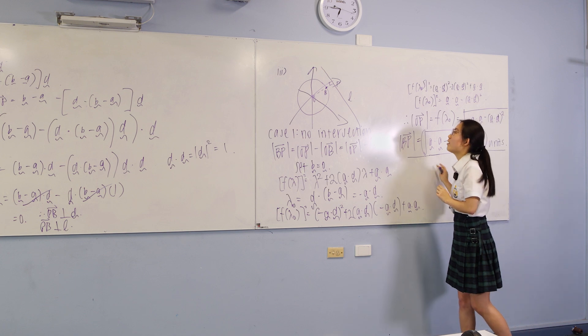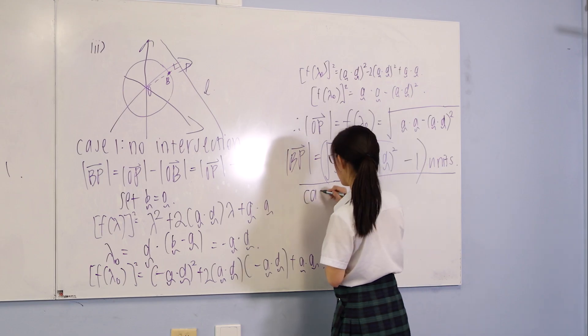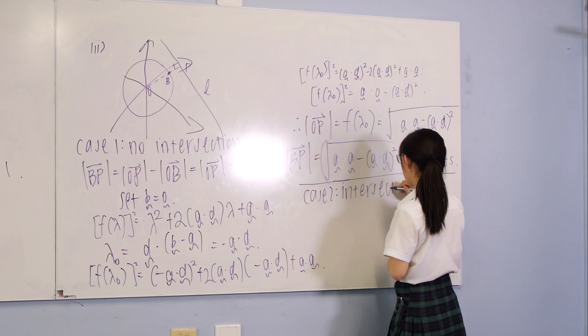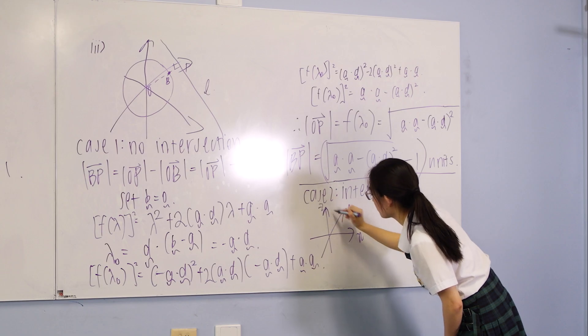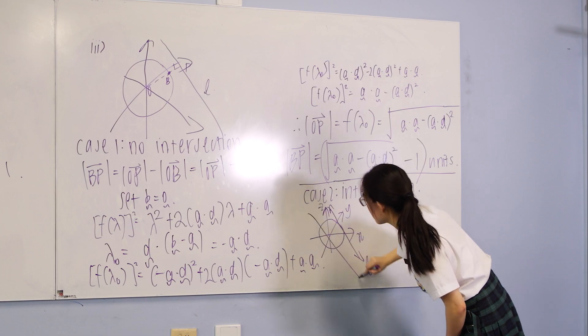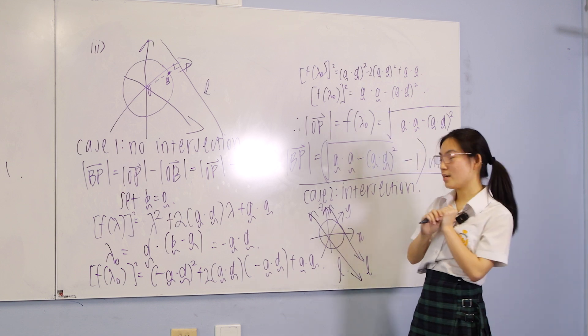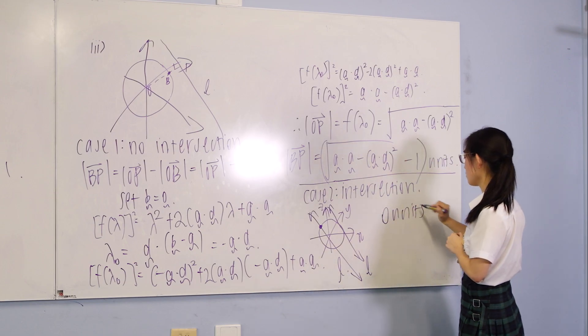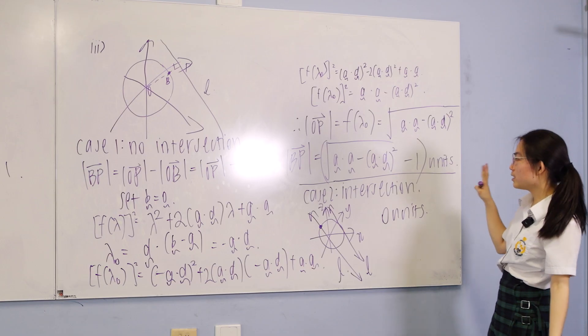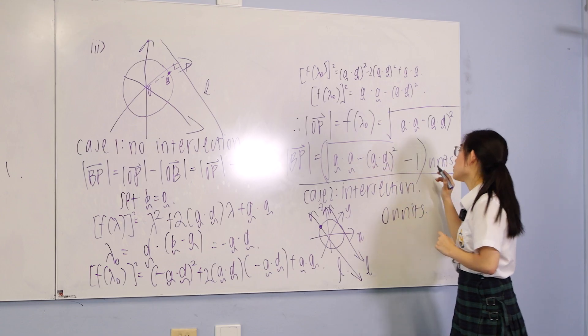Now let's consider the point where the line intersects with the sphere, either at one point where it's tangential or two. Here we can see that the minimum distance between a point on the sphere and the point on the line must be zero at the intersection point. So this gives a minimum distance between a point on the sphere and the line is either square root of a dot a minus a dot d all squared minus one units or zero units.